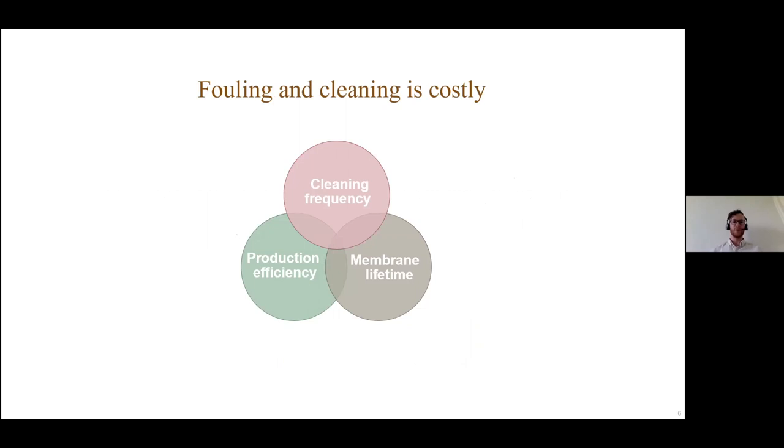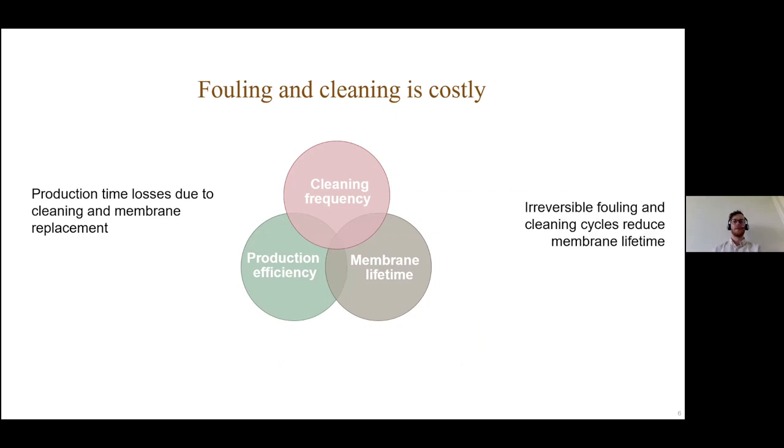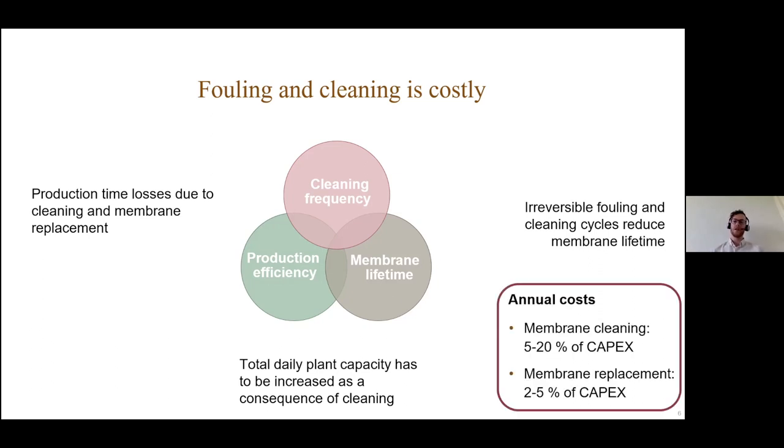Why are we going to talk about this? Because fouling and cleaning is costly. When the membrane is fouled and then has to be cleaned, there's production time losses. Irreversible fouling and cleaning reduces the membrane lifetime. Overall, the total daily plant capacity has to be increased. It's a fine balance between cleaning frequency, production efficiency, and membrane lifetime. This leads to costs for membrane cleaning: 5 to 20% of the capital expansions of the membrane plant, and membrane replacement is 2 to 5% of capital expansions.